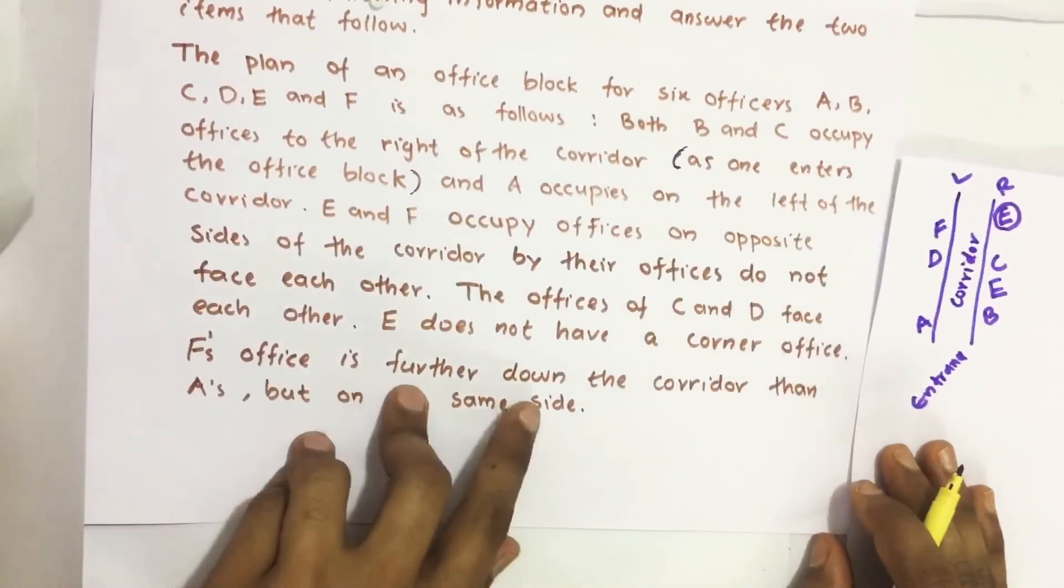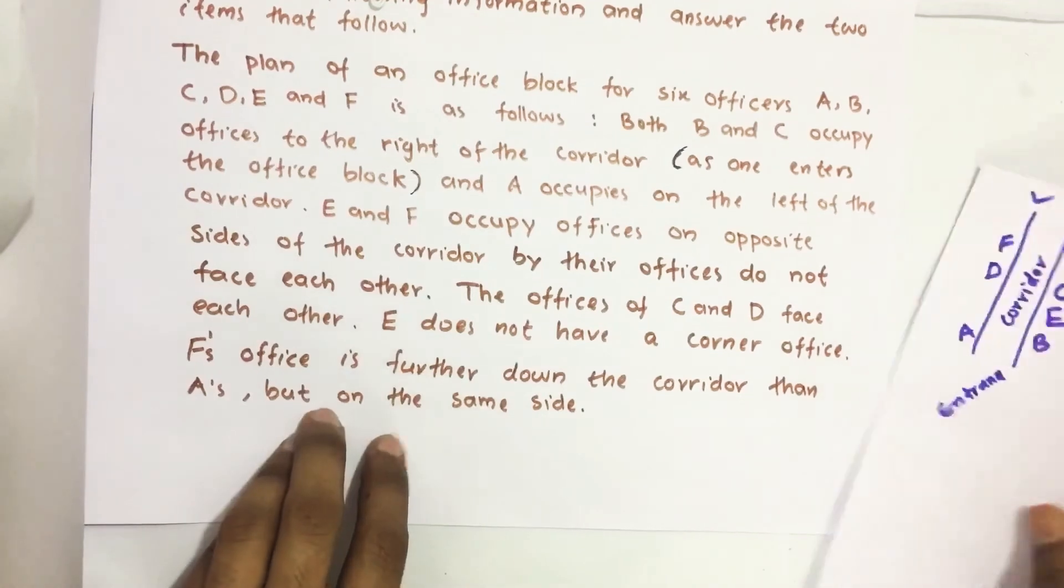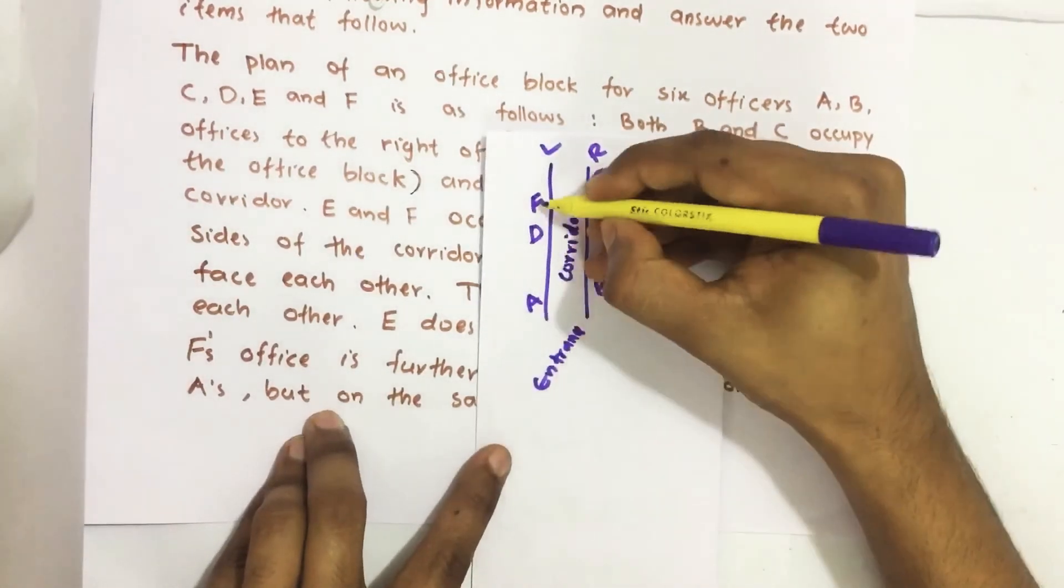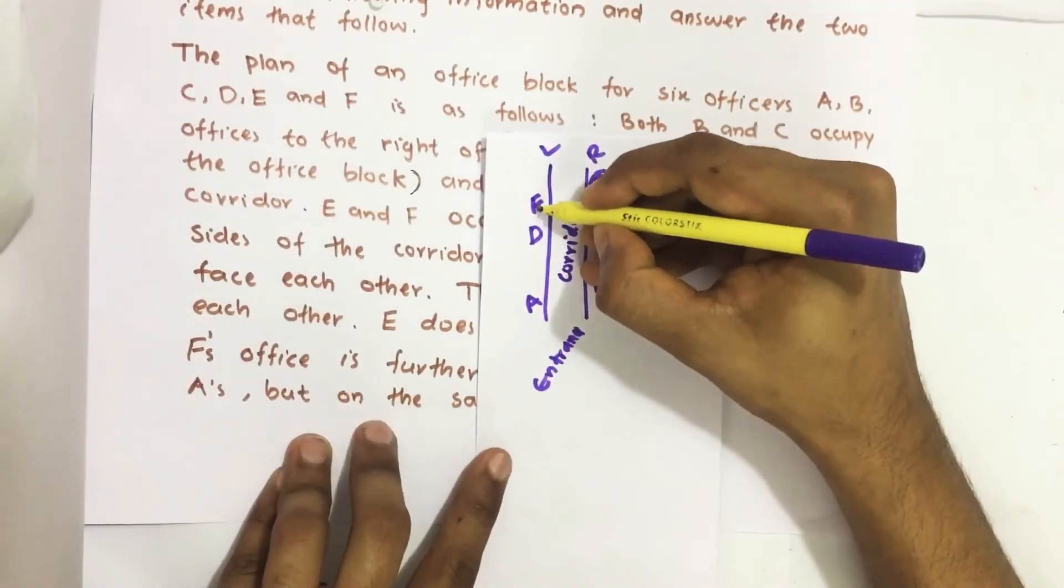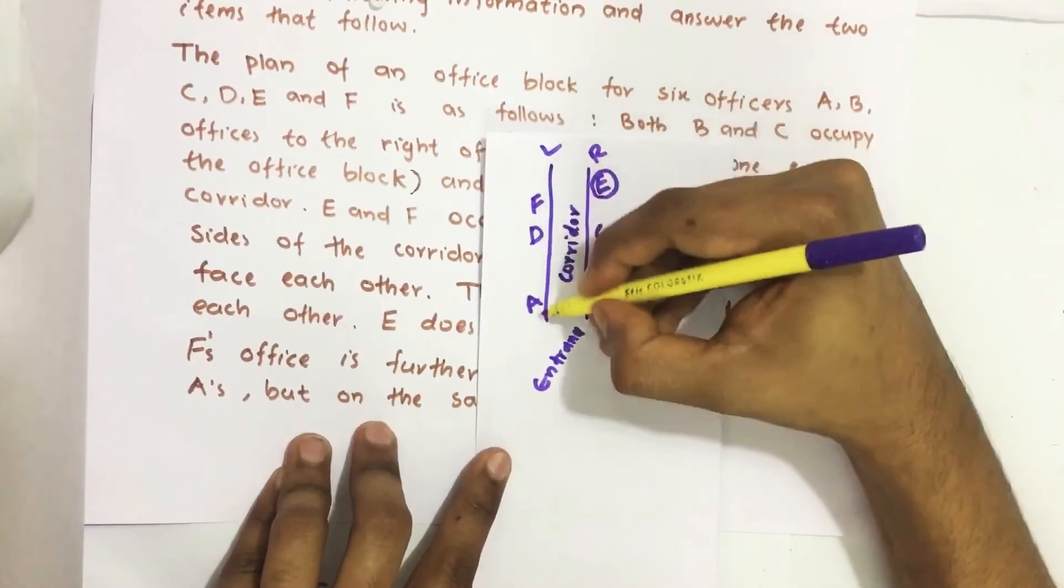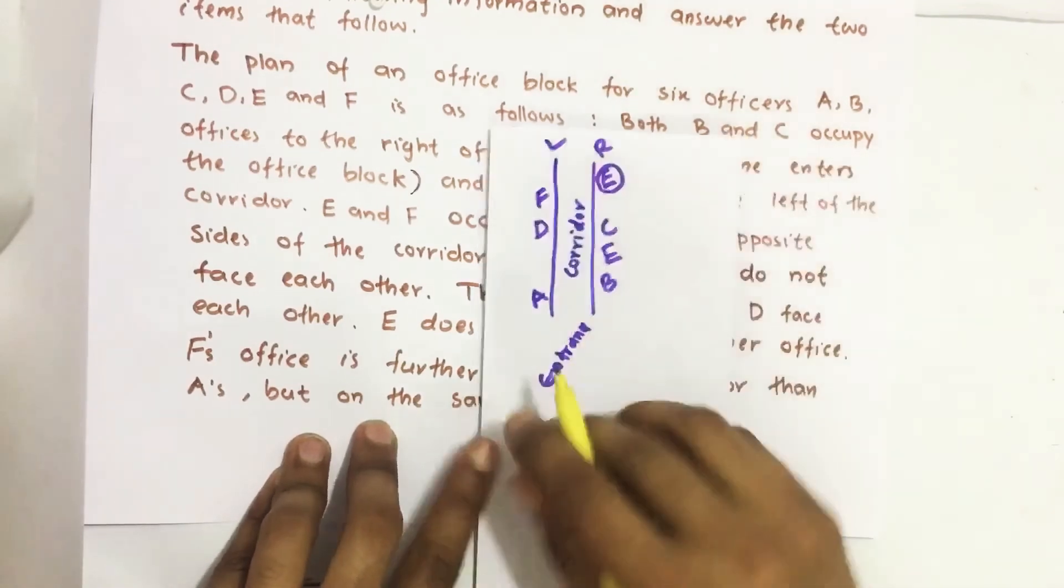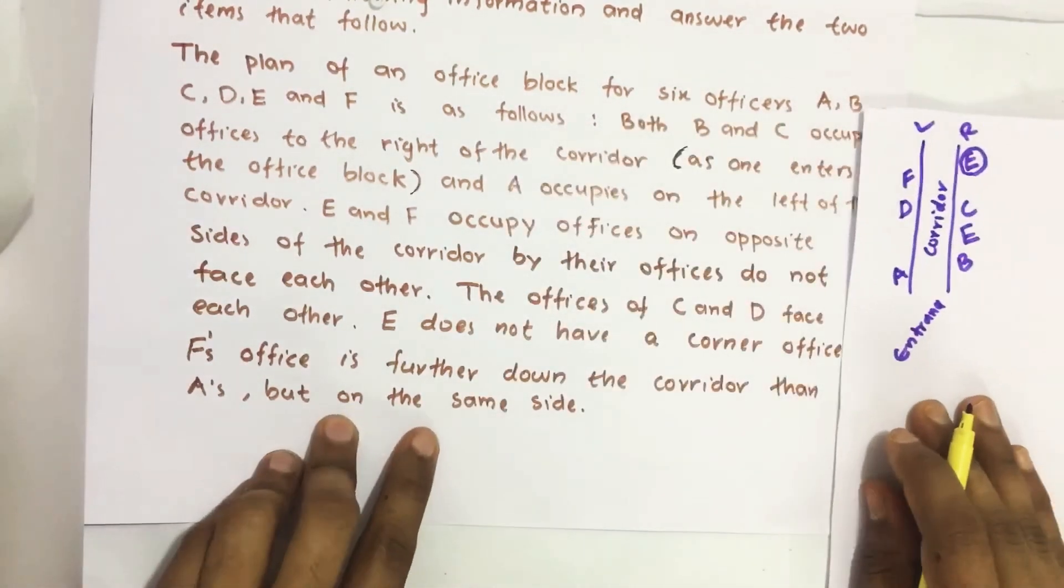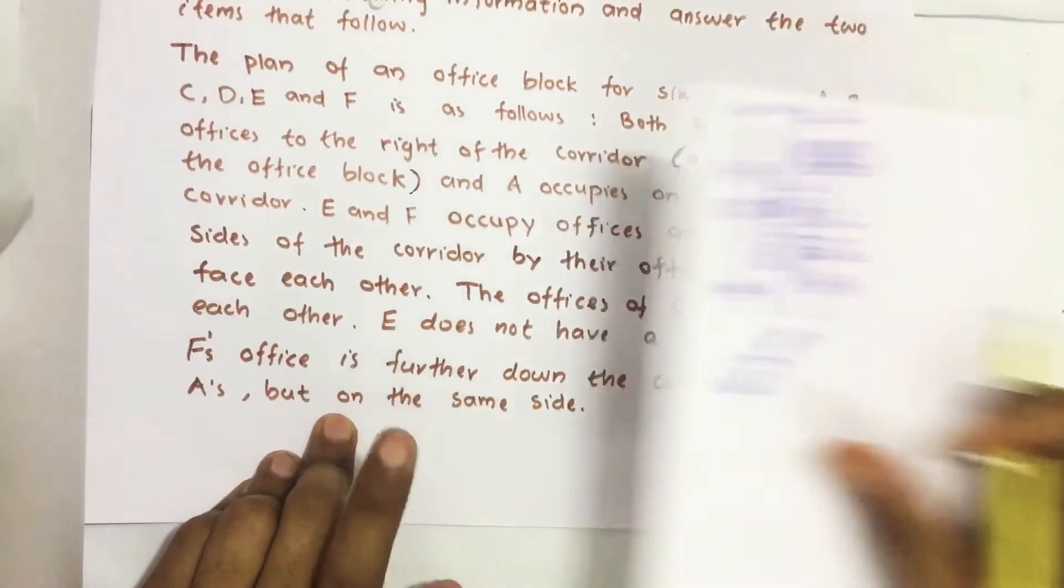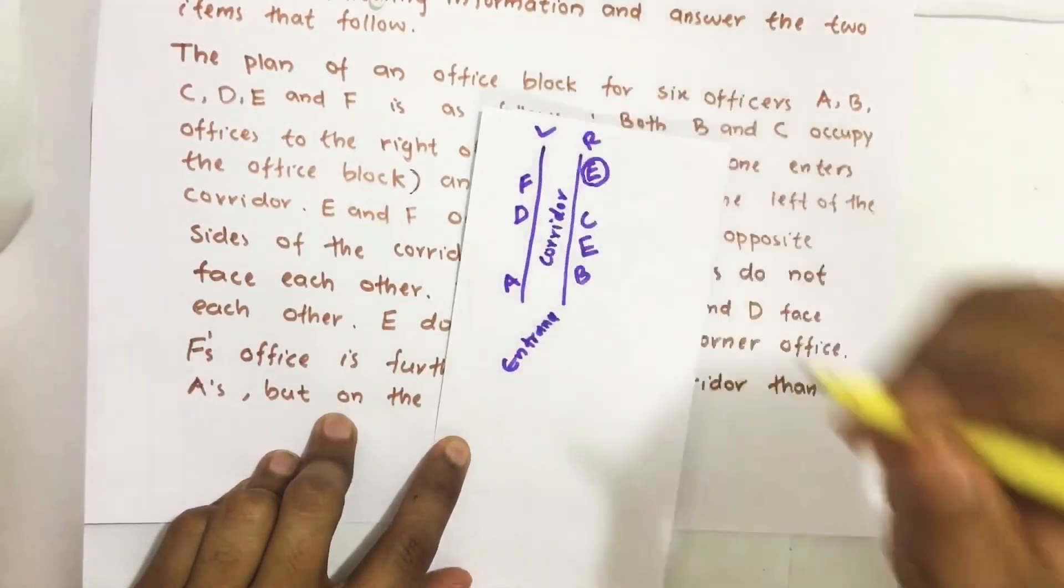F office is further down the corridor than A. So here we already kept F office here. It is further down than A while you are entering the office block. But on the same side.